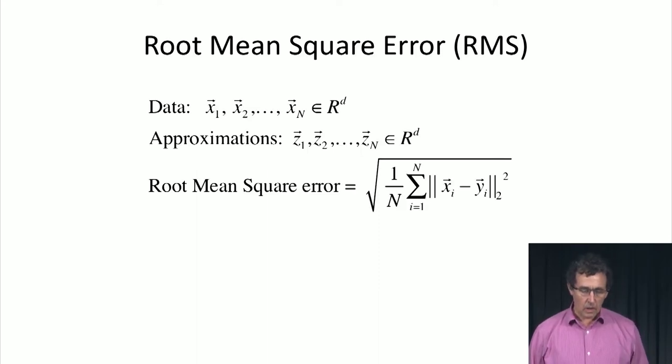What is the root mean square error that we're always trying to minimize? If we have points x1 to xn and approximations to these points, we want the square of the Euclidean distance between these points to be minimized when you take the average over all the points. The square root undoes the square so it's in the same units as the original.